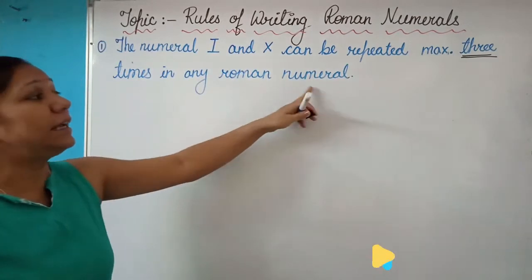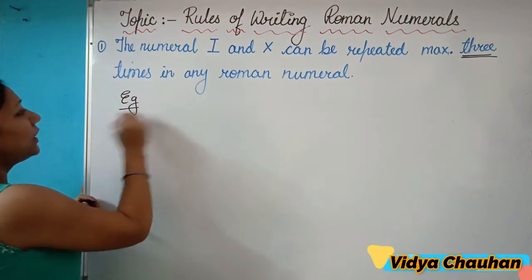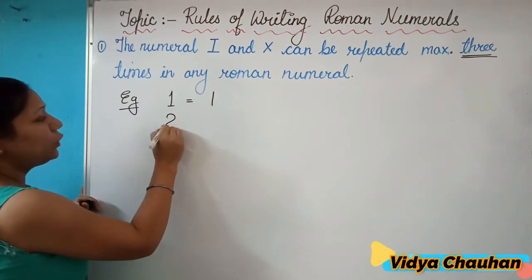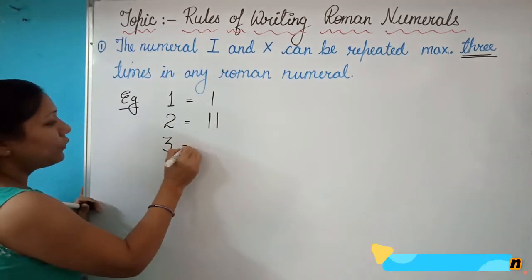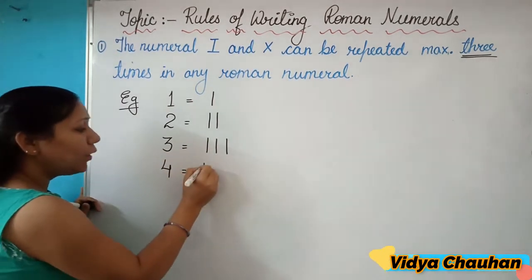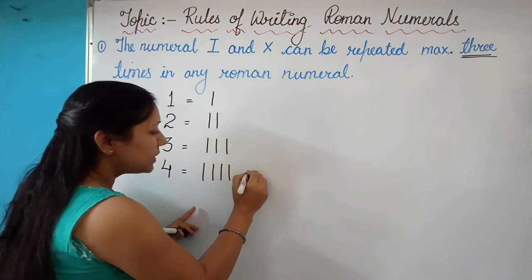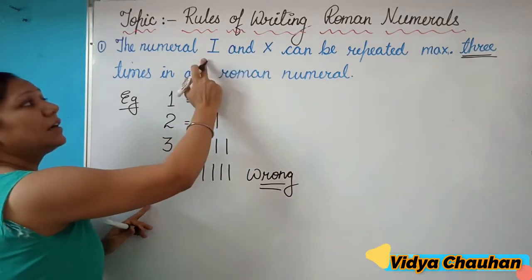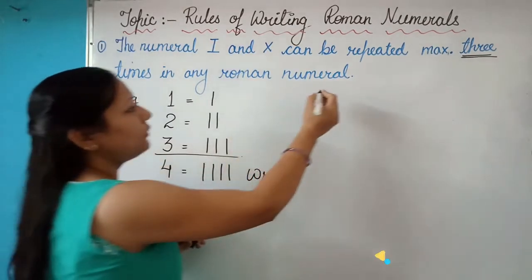For example, if I have to write one in Roman format, we write it as I. If you have to write two, it is II. If I have to write three, it is III. But if we have to write four, we cannot write it as IIII — four times — because according to the rule we can repeat the symbol only a maximum of three times.